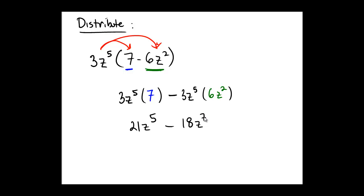And then z to the 5th times z squared, which is a total of 7 copies of z, 5 from here and 2 from over there. So the final answer here would be 21z to the 5th minus 18z to the 7th.